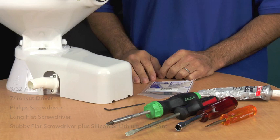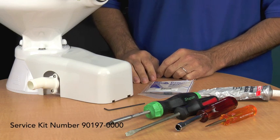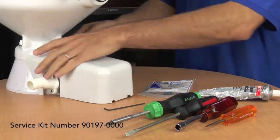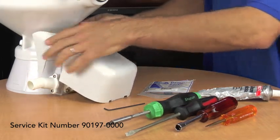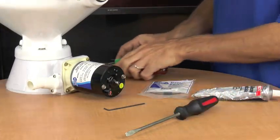3/32nd Allen wrench and the nut drivers are 7/16ths and also some lube. You also want to have some gloves handy and make sure the power is disconnected from the toilet. Okay, so let's get into it.